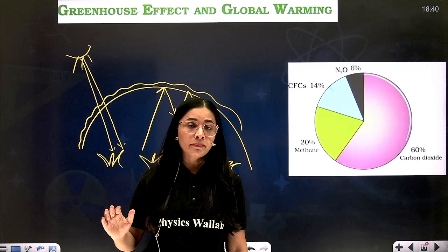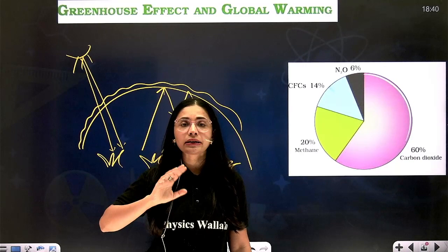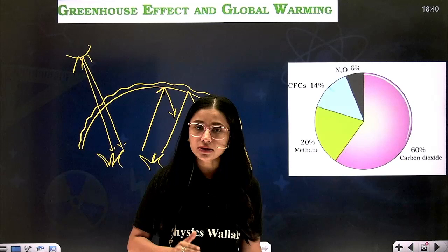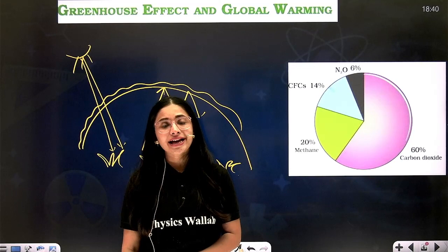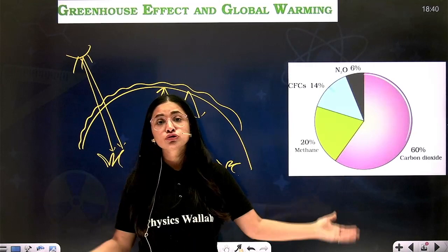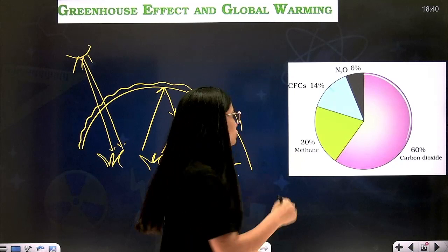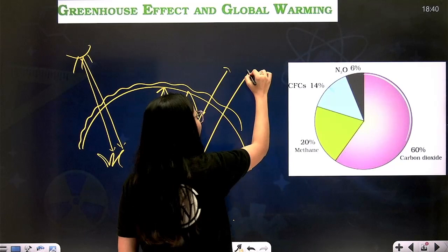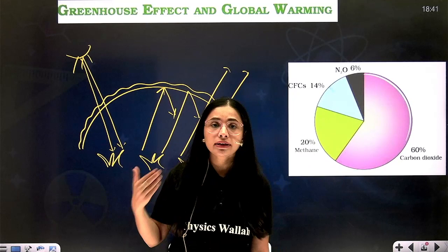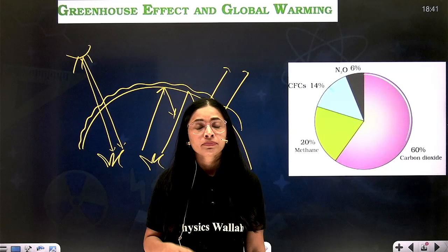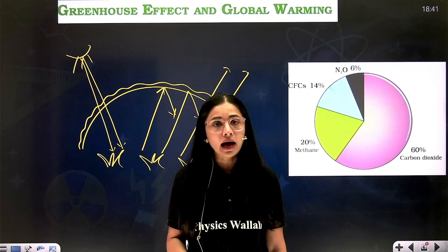If there were no greenhouse effect, we would not be able to survive — the temperature of the earth would be around minus 18 degrees. So the greenhouse effect is responsible for maintaining a healthy temperature on earth. But due to human activity, the concentration of greenhouse gases has increased to a tremendous extent. As a result, even radiations that could have escaped are getting re-radiated back, leading to an increase in earth's temperature. It is said that in the last few decades, the temperature of earth has increased by 0.6 degrees Celsius, which is very alarming. This is known as global warming.